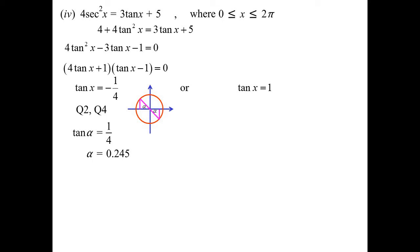Second quadrant: π minus the acute angle. Fourth quadrant: 2π minus the acute angle. Remember π is 3.14, etc., and we get x is 2.897 or 6.038.